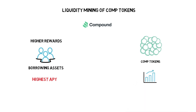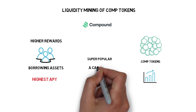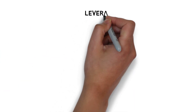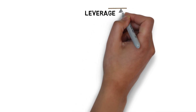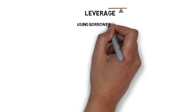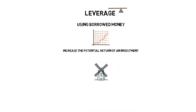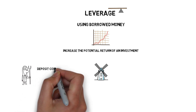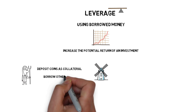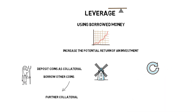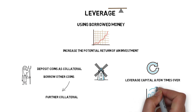COMP liquidity mining got super popular and was pretty much a catalyst for a wider spread of yield farming. Besides liquidity mining, leverage is another element that makes ultra-high returns possible. Leverage is a strategy of using borrowed money to increase the potential return of an investment. In yield farming, farmers can deposit their coins as collateral to one of the lending protocols and borrow other coins, then use the borrowed coins as further collateral and borrow even more. By repeating the whole procedure, farmers can leverage their initial capital a few times over and start generating even greater returns.